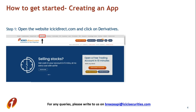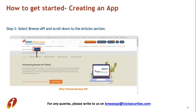To get started, visit our website icicdirect.com and click on the derivatives option. Now click on Breeze API and scroll down.